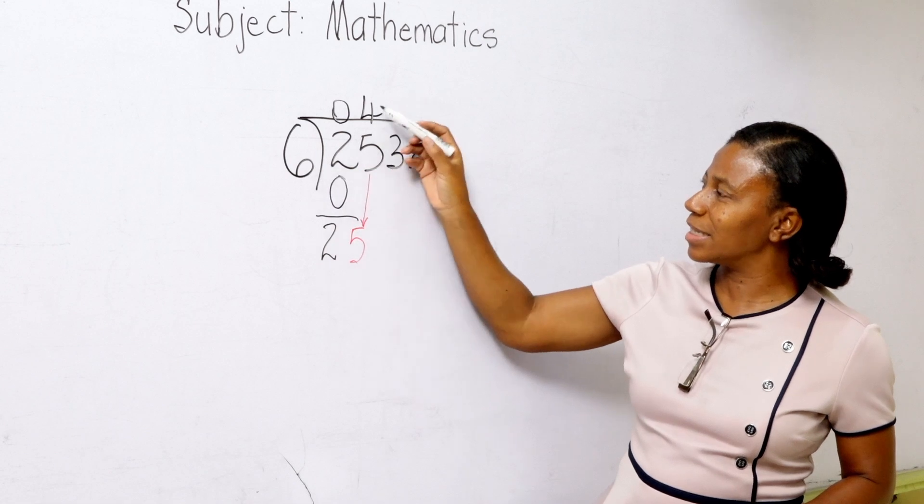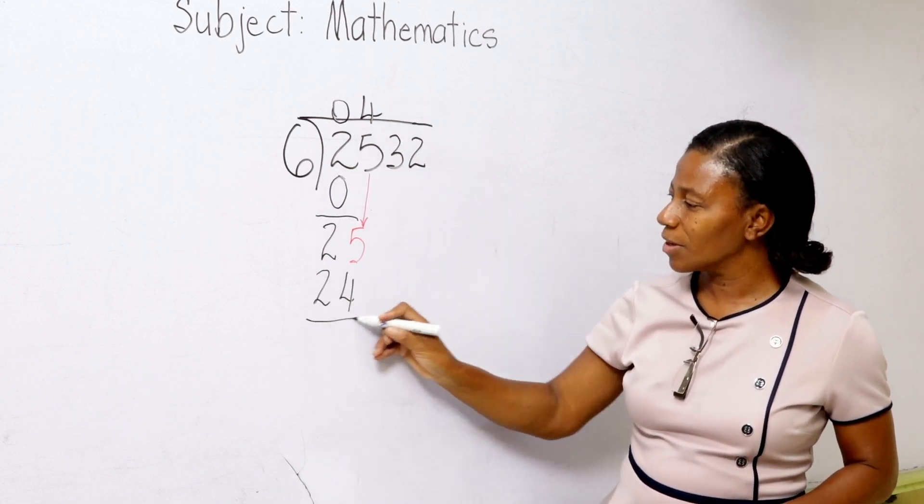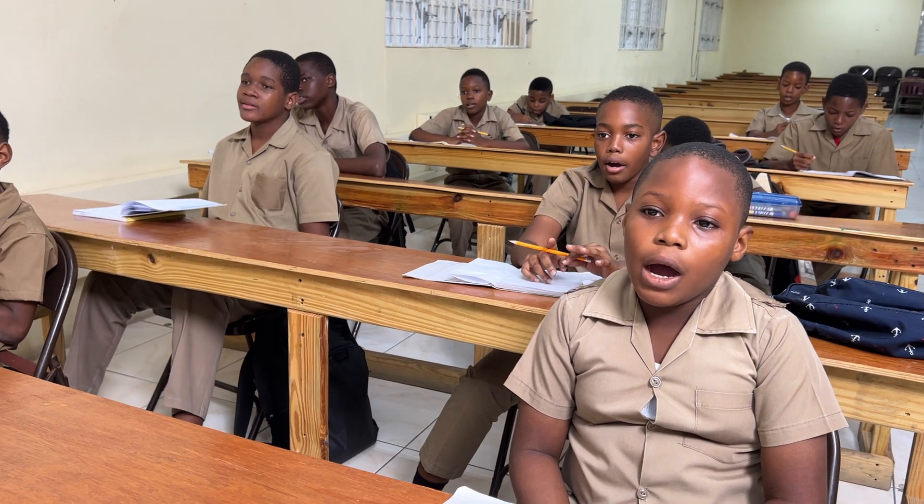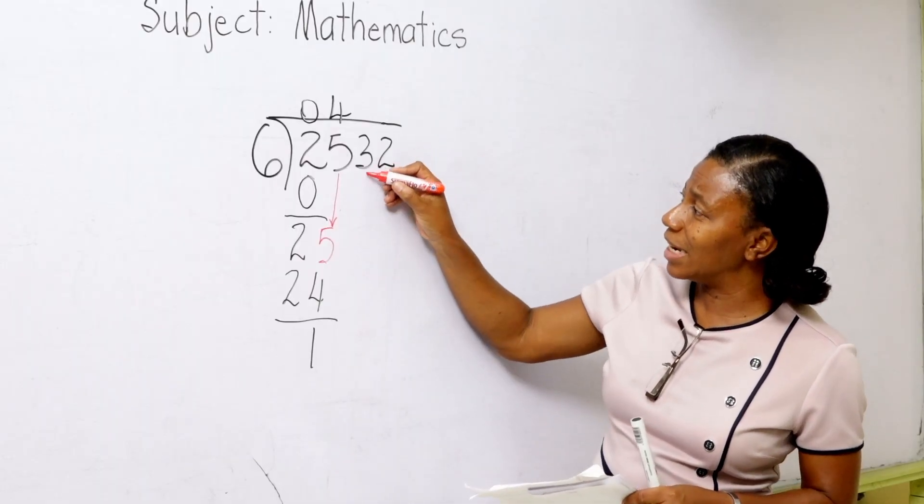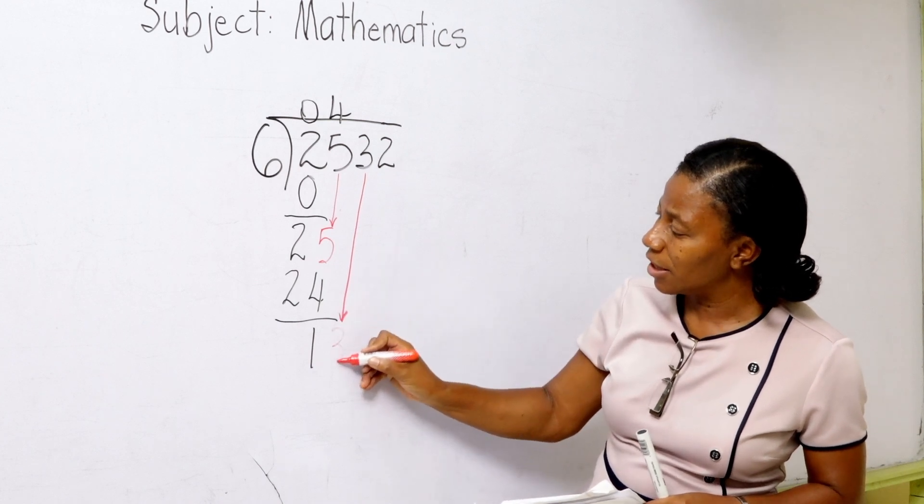And then we are going to say 6 times 4? 24. And we are going to say 24 from 25 gives us 1. And then we are going to go to the next numeral in line and we are going to take it down. Which is numeral what? 3. Numeral 3.